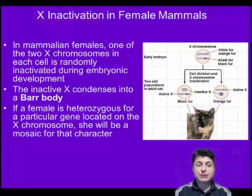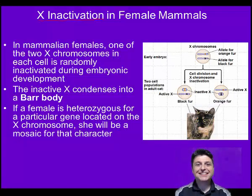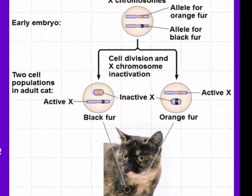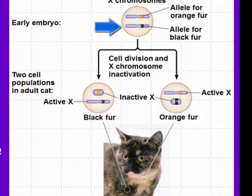If a female is heterozygous for a particular gene located on that X chromosome, she will actually be a mosaic for that particular color. One way to see the effects of X-inactivation is by looking at the characteristic of calicoism in cats. In order to have a calico cat, a female cat inherits both a gene for orange fur and a gene for black fur, and these genes are carried on homologous chromosomes.